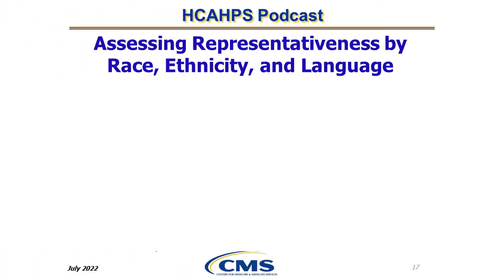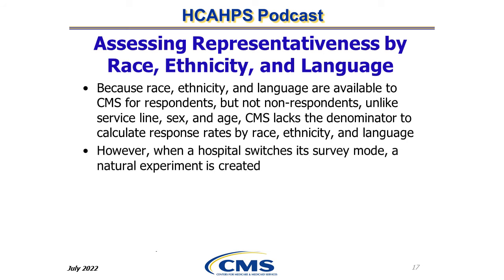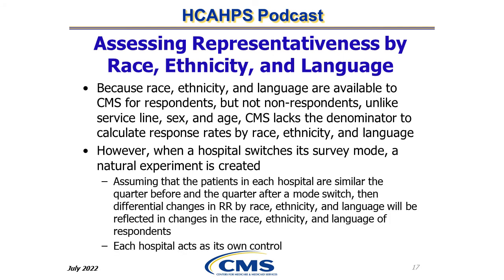Because race, ethnicity, and language are available to CMS for respondents but not non-respondents — unlike service line, sex, and age — CMS lacks the denominator to calculate response rates by race, ethnicity, and language. However, when a hospital switches its survey mode, a natural experiment is created with each hospital acting as its own control. Assuming that the patients in each hospital are similar the quarter before and after a mode switch, differential changes in response rate by race, ethnicity, and language will be reflected in changes in the race, ethnicity, and language of respondents.